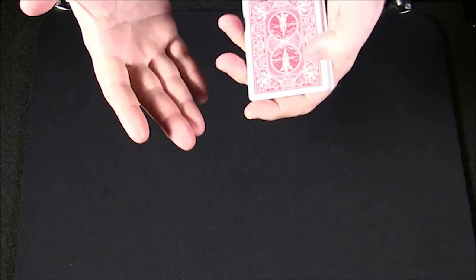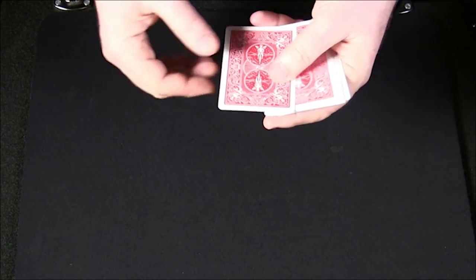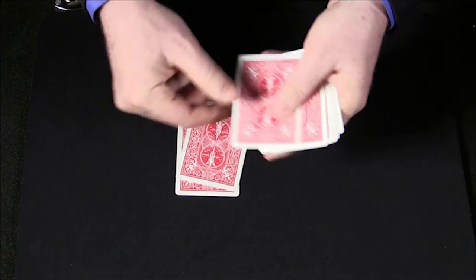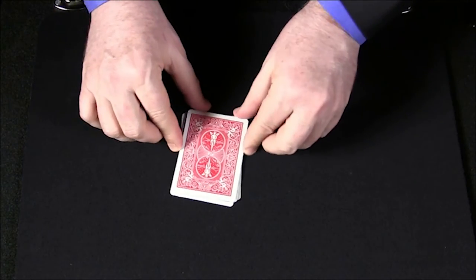Now spell out your card. In my case it was the eight, one card for each letter: E-I-G-H-T. Take the rest of the cards and place them on top.